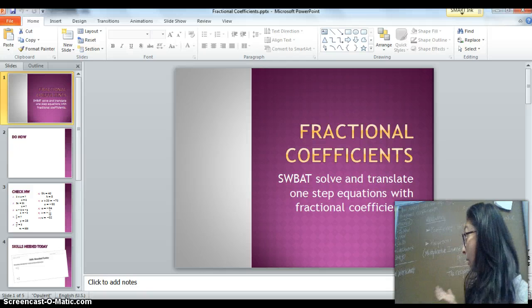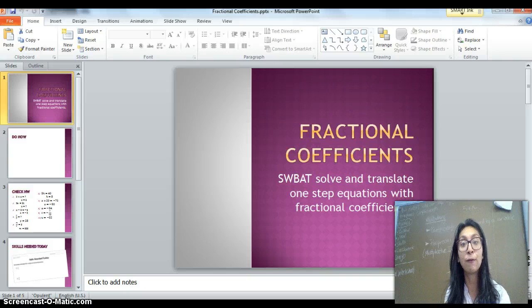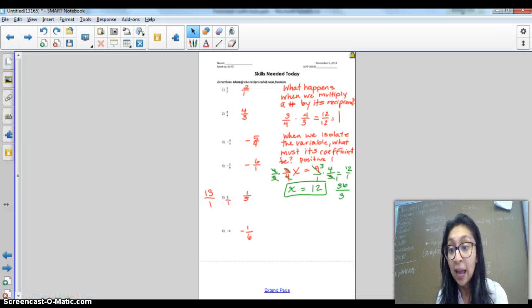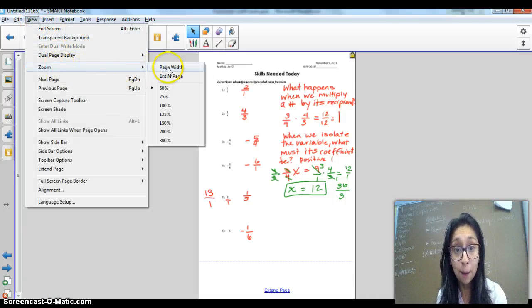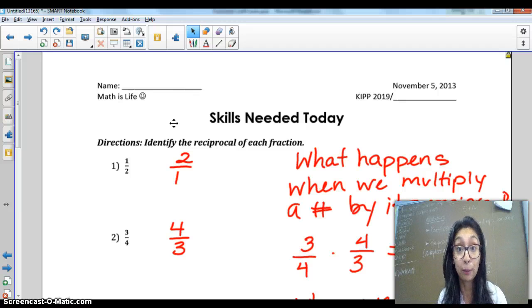So if you look behind me, I put up the terms coefficient and reciprocal at the beginning of class, and they did their do now, and then it was time for us to review skills that they needed. So we completed this worksheet together, skills needed today. And the first thing that this worksheet asks them to do is to identify the reciprocal of each fraction. Now, this is a new worksheet that I came up with today, so that will be included in this section of the lesson and the reflection. The first thing that they did was, again, identify their reciprocal. They did that completely independently.